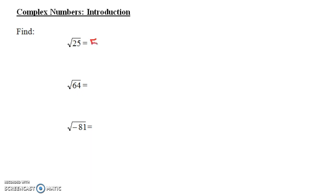Well, of course it's 5. And what do we mean when we say it's 5? The reason that it's 5 is because if we square 5, we get 25. Now the square root of 64 is 8, and the reason it's 8 is because if we do 8 squared, we get 64.